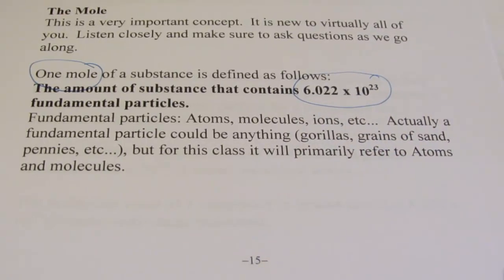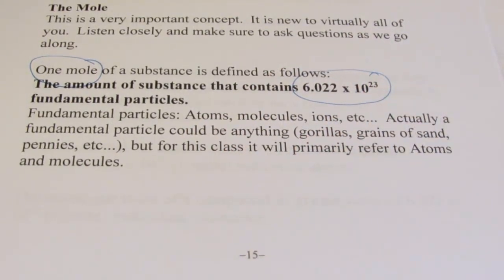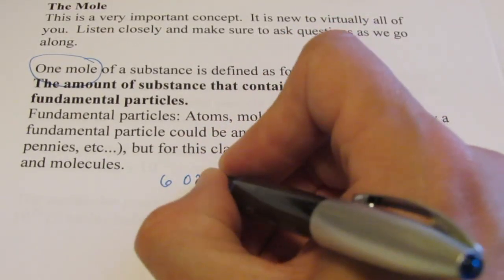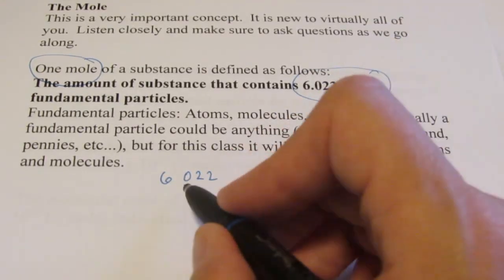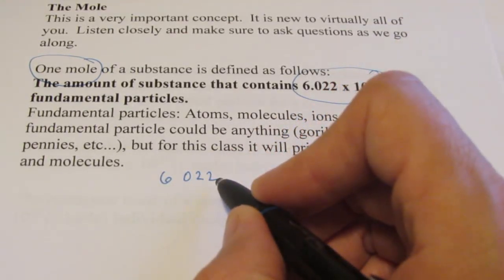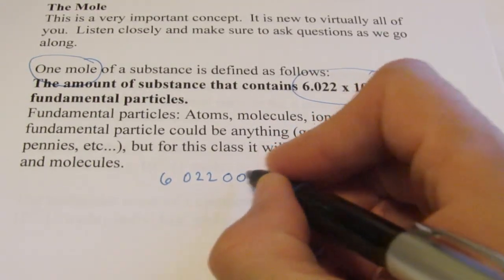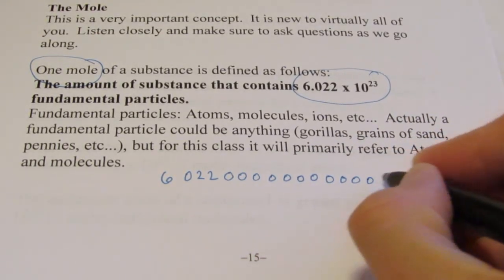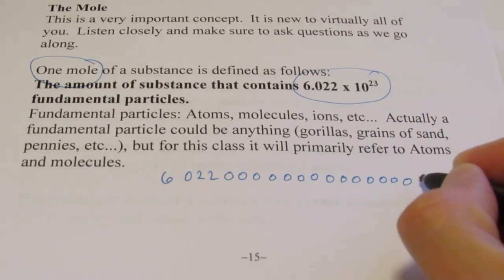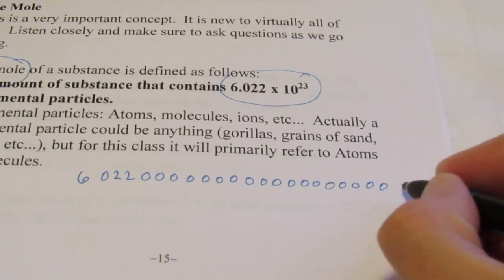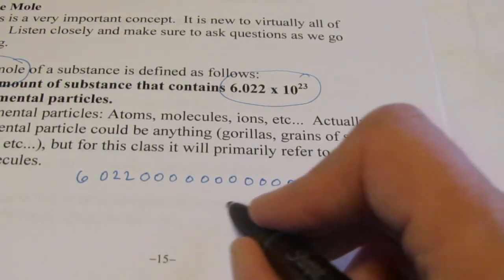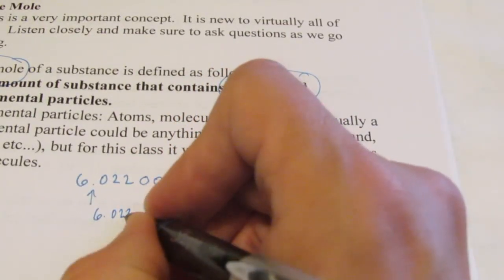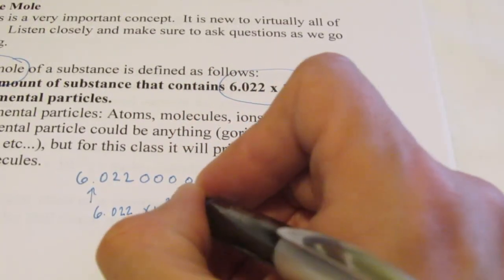That's a big number. Written out longhand it's 602,200,000,000,000,000,000,000 — we move a total of 23 decimal places, which is why we write it as 6.022 times 10 to the 23rd. You might ask why we use such a large number in chemistry. Why not just use a dozen — 12? Well, do you think a dozen atoms would give you very much of an element? Probably not, because atoms are ridiculously small. A mole of atoms would be something you could actually see and find the mass of.